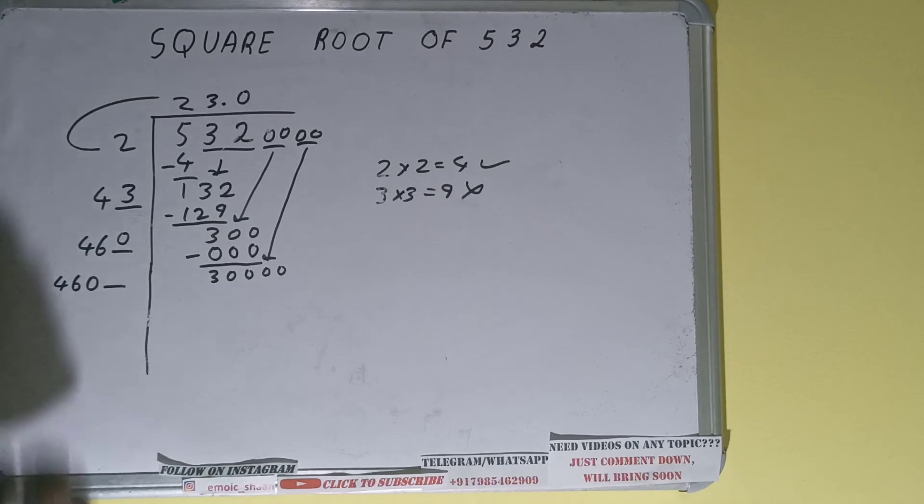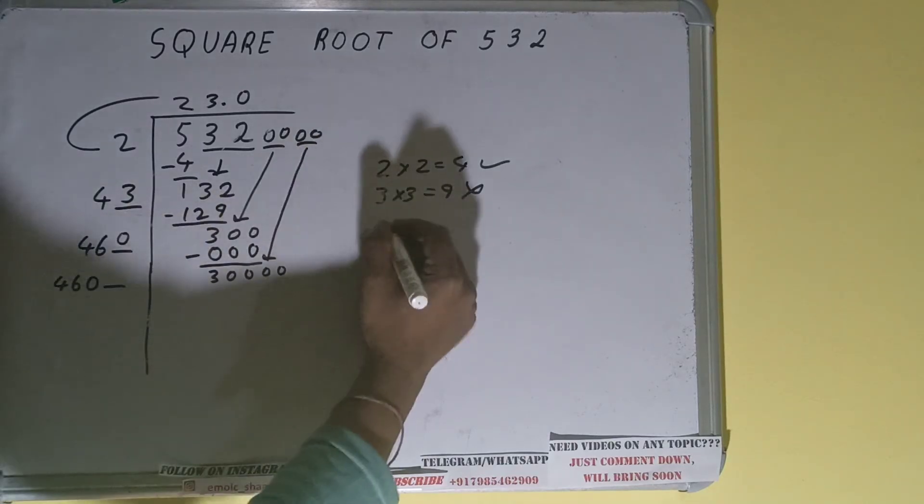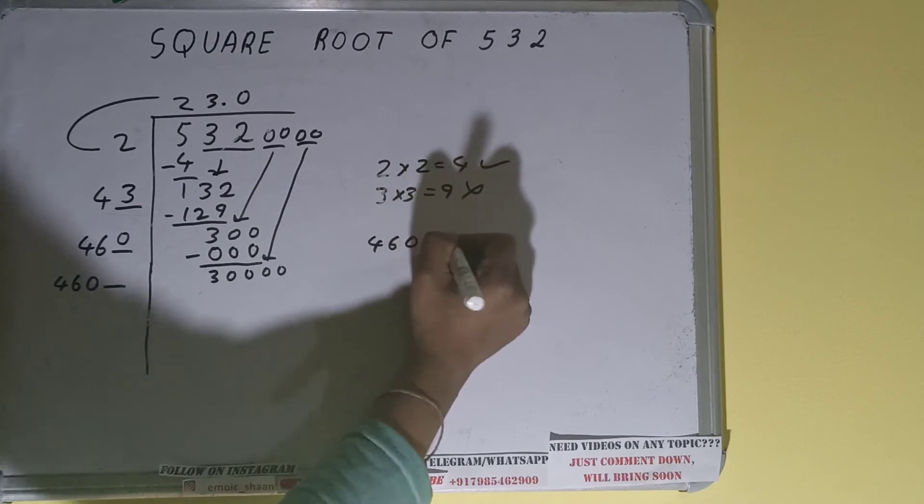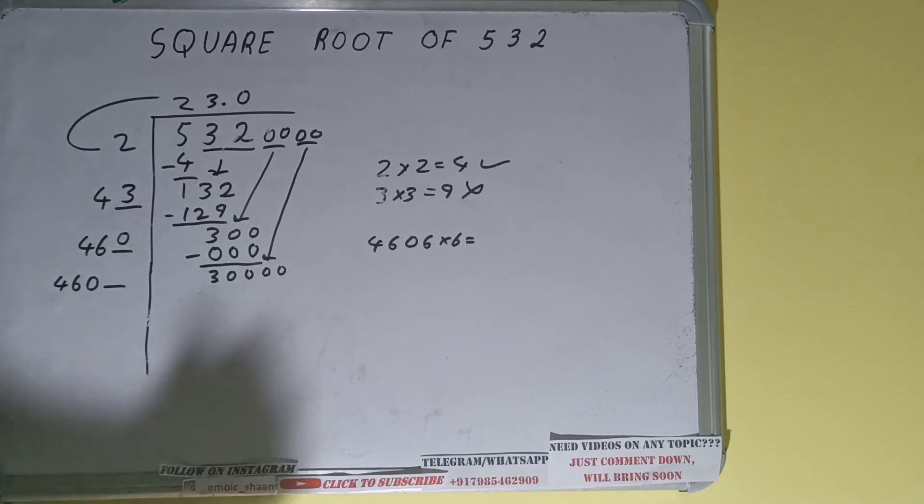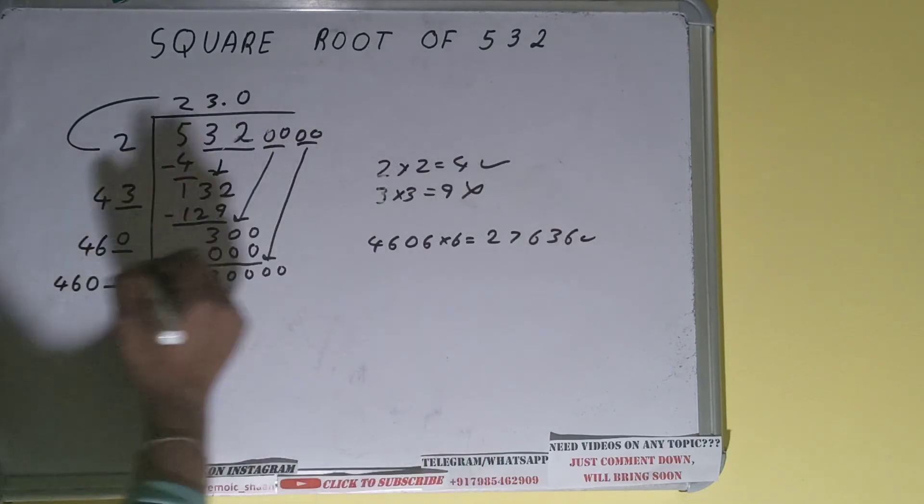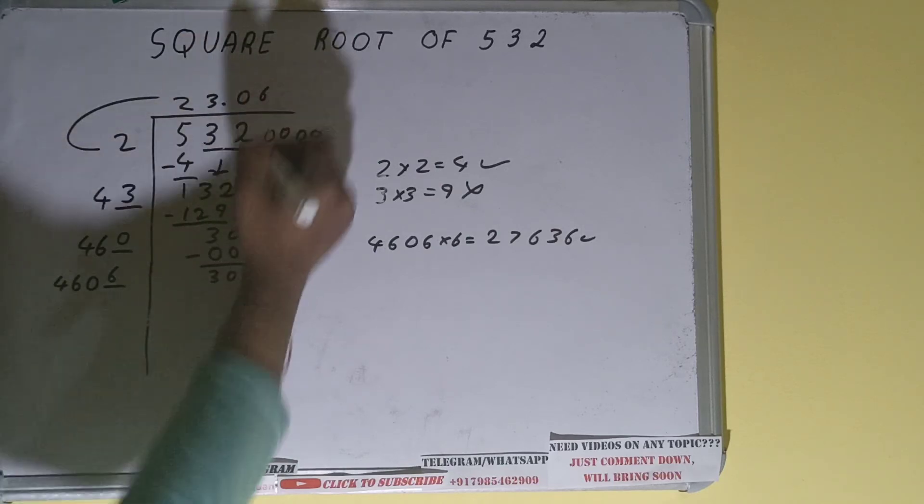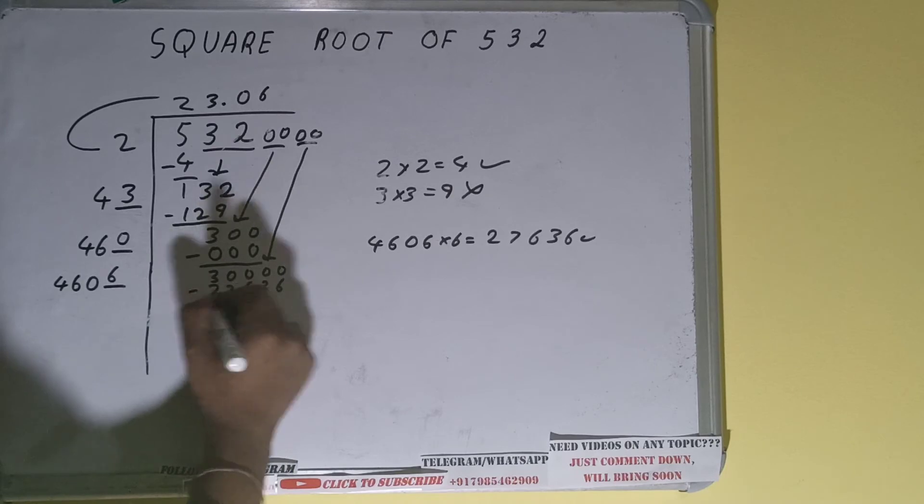Now compare this 46 with this 300, so 46 6 times is 276, so we can try 6 times, so 4606 into 6 we can try. It will be 27,636 which is good to take, so 6 here and 6 here will give 27,636. Subtract it.